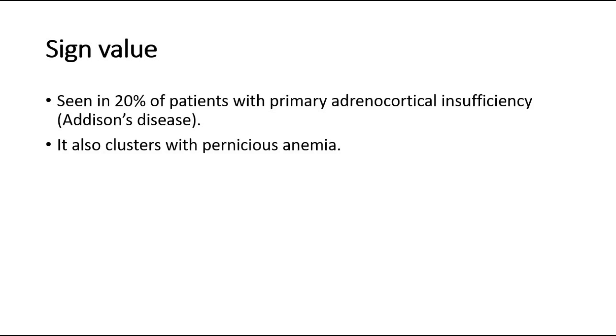For its sign value, vitiligo is seen in 20% of patients with primary adrenocortical insufficiency, which is also called Addison's disease. It also clusters with pernicious anemia.